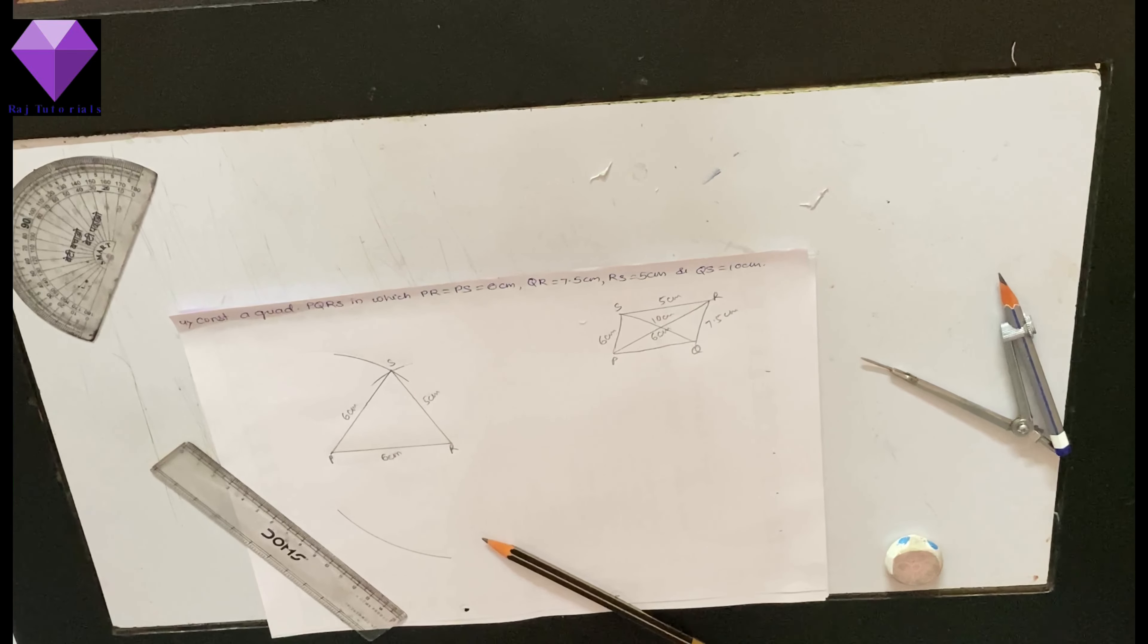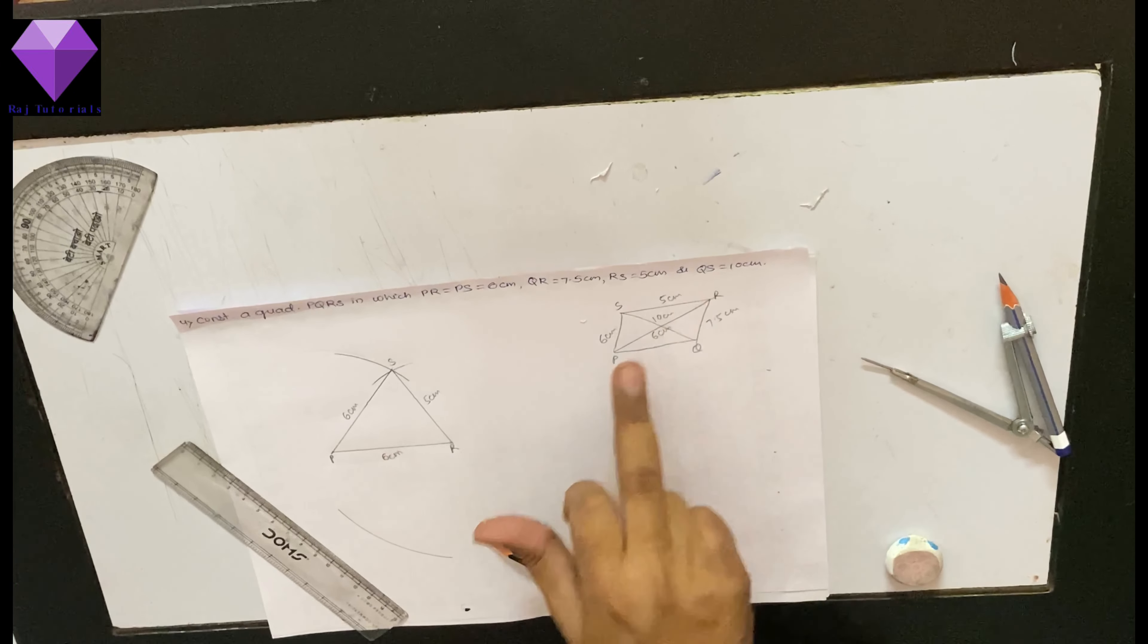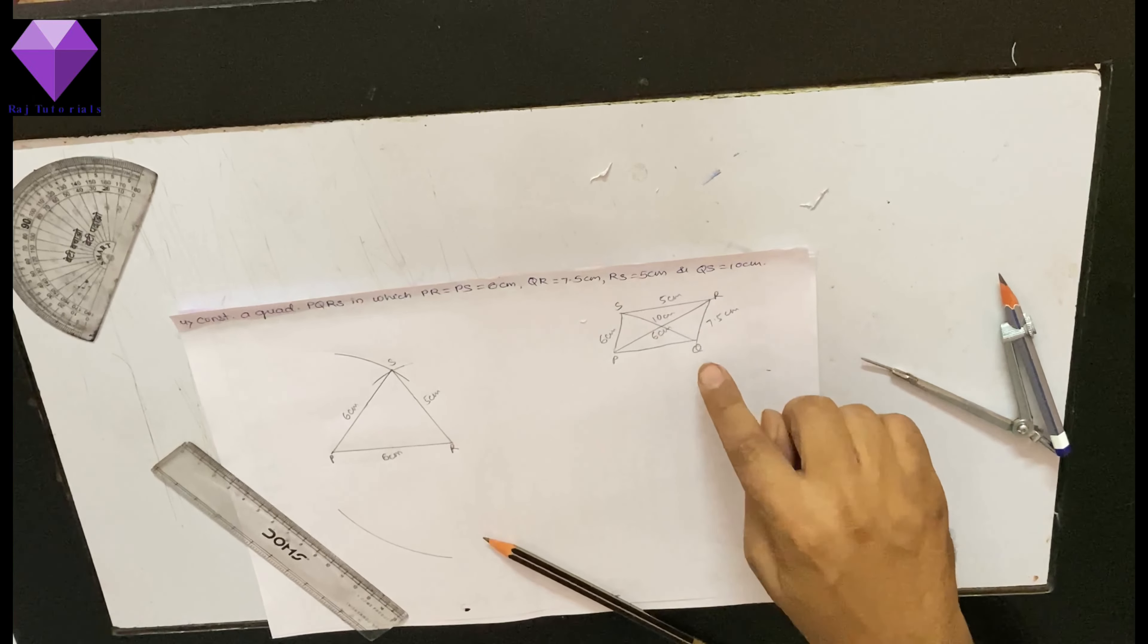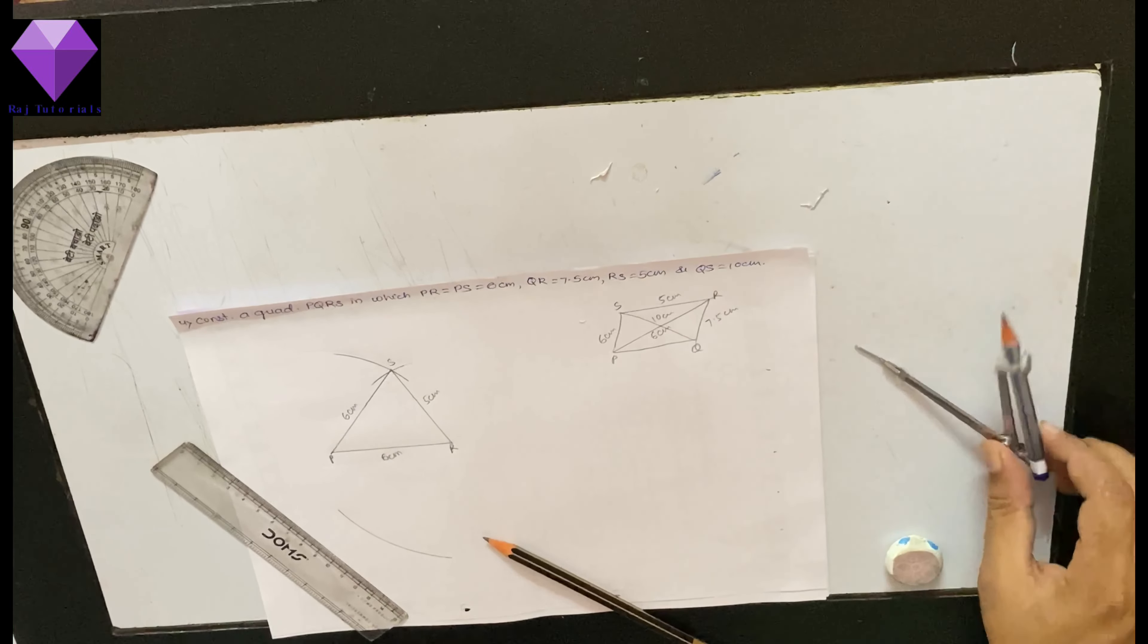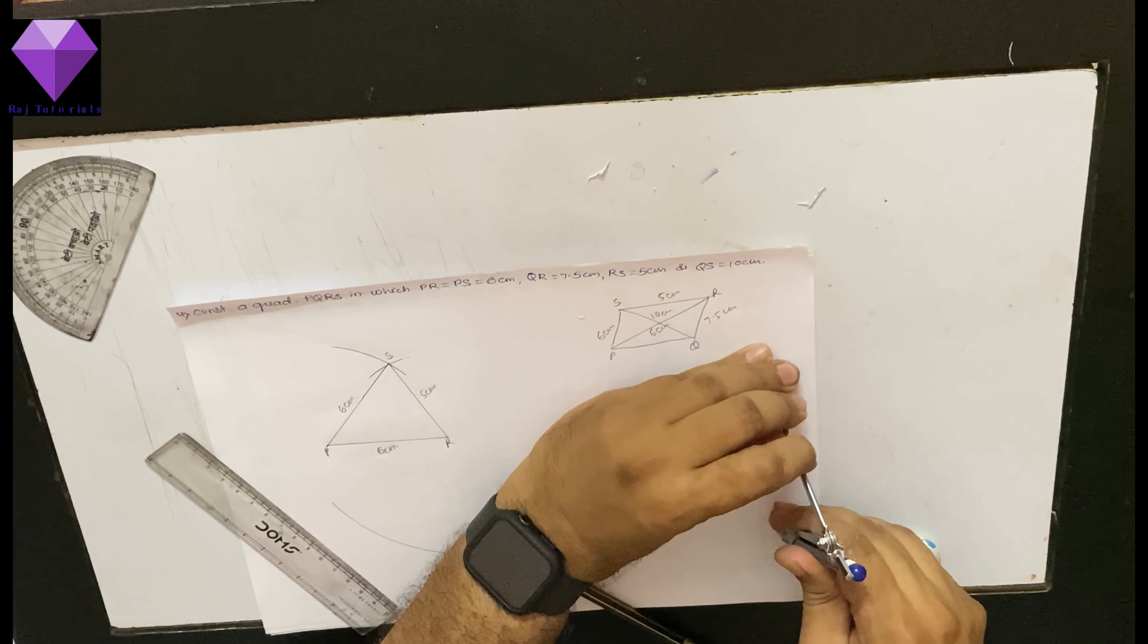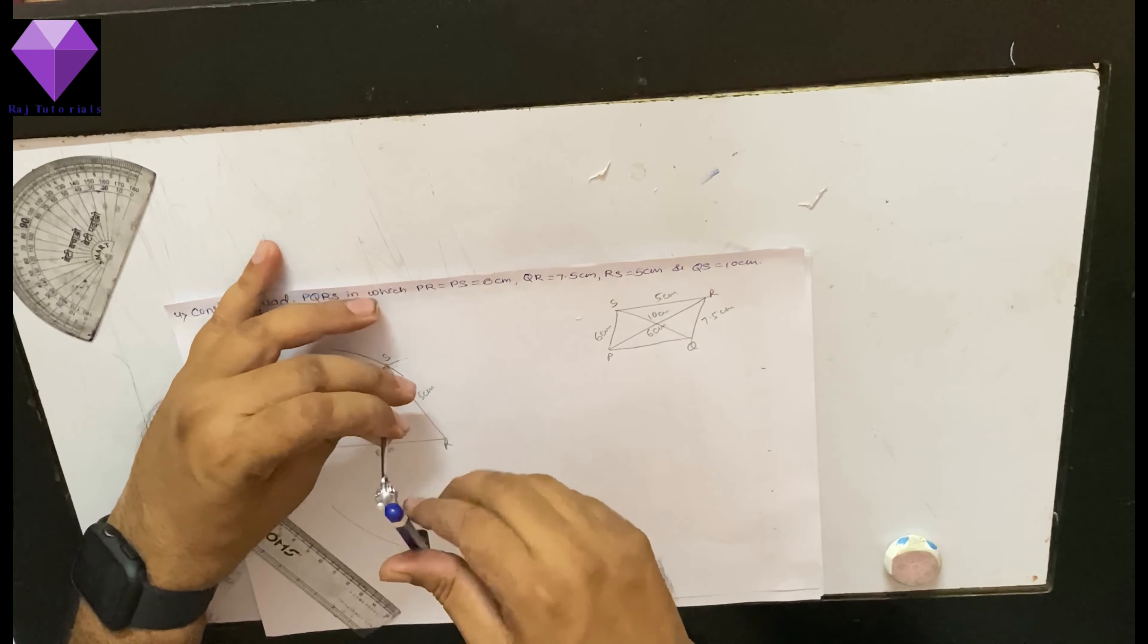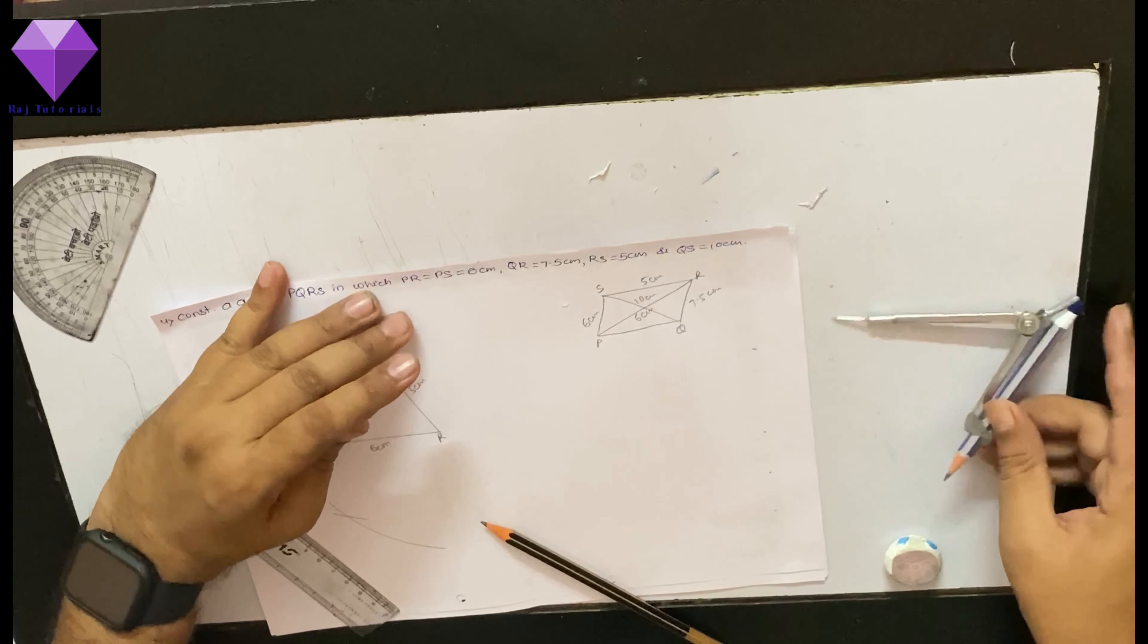And now, the other thing which is given to me is SQ that is 10 cm. So, now, I will measure 10 cm in my radius. And with S's center, I will cut the arc drawn on the lower side. Wherever it cuts, that is my point Q.